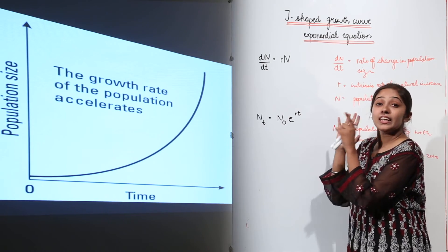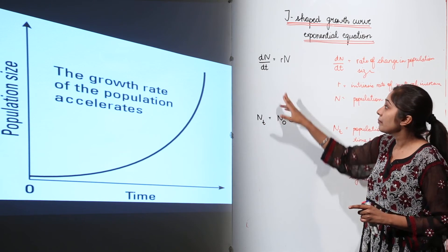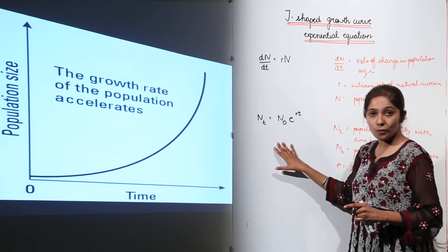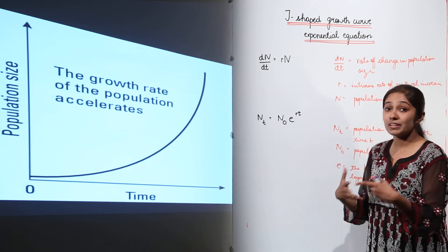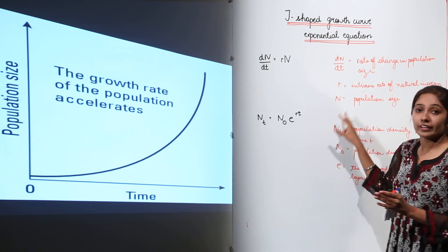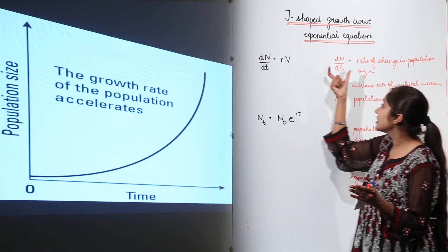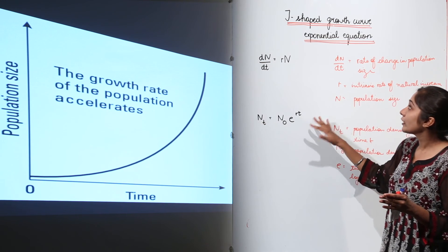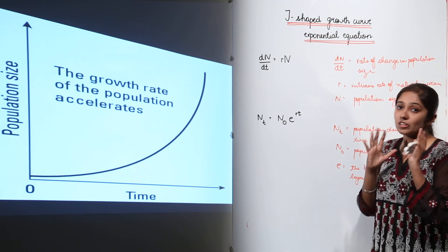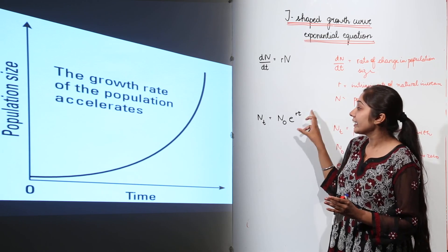You just have to remember the equations for the J-shaped growth curve. This is the exponential equation, and this is how we write it in integral form. Remember dn upon dt equals rN — understand what each term stands for. This equation is very important from an examination point of view. Once you understand it, you will be able to calculate the rate of change in population size using the intrinsic rate of natural increase and the general population size.